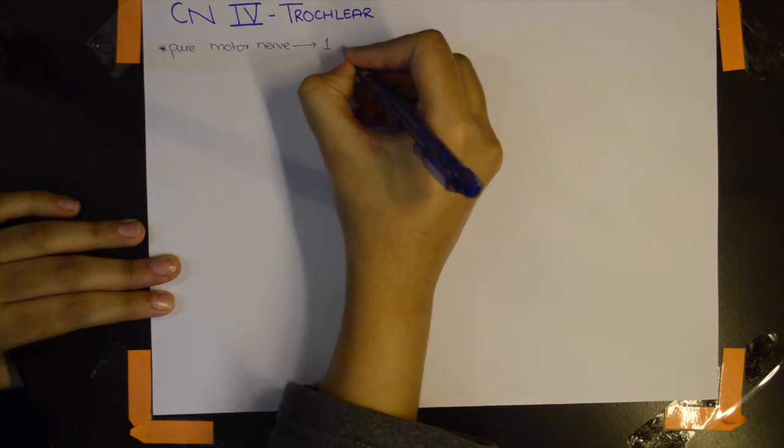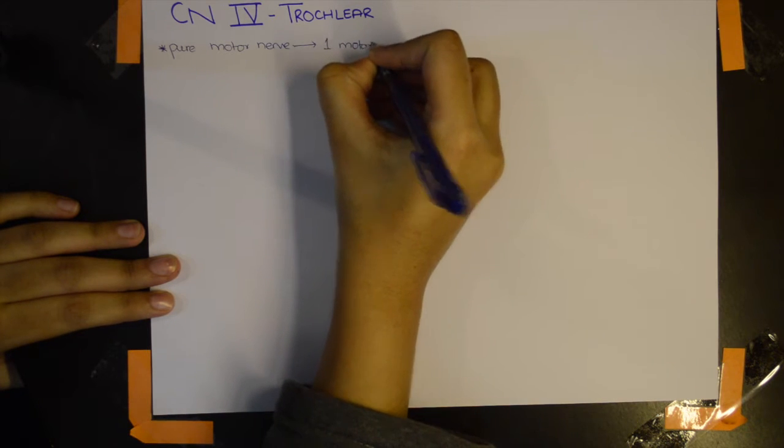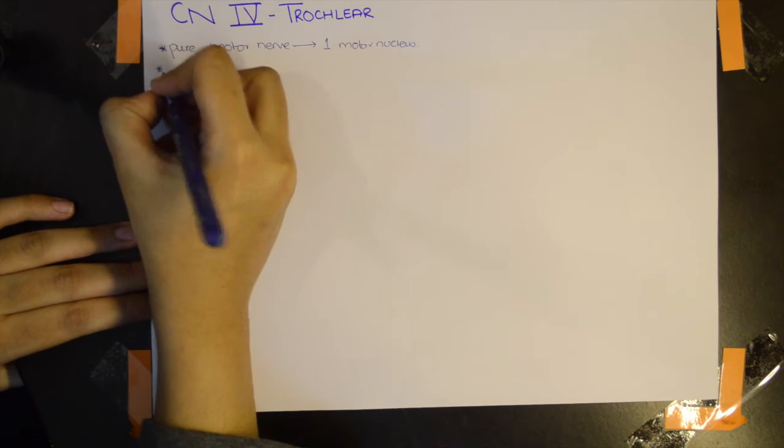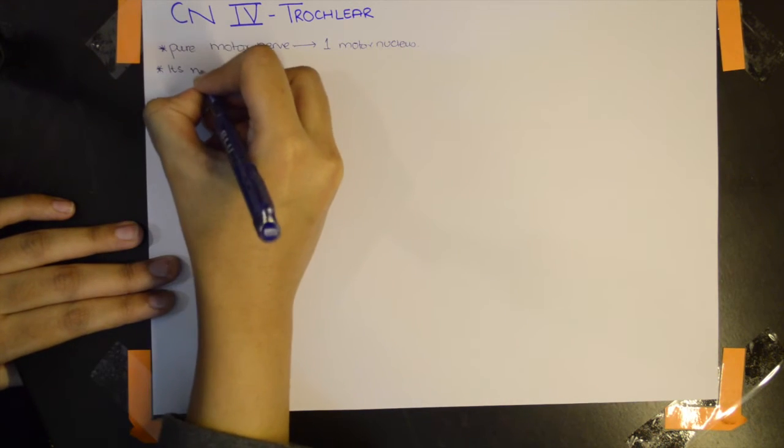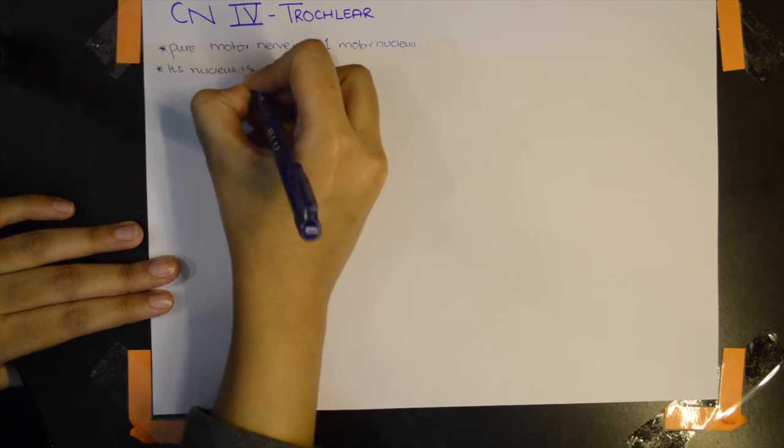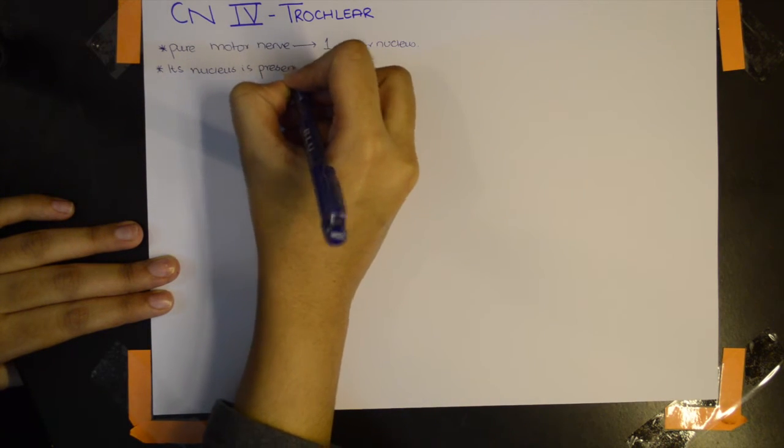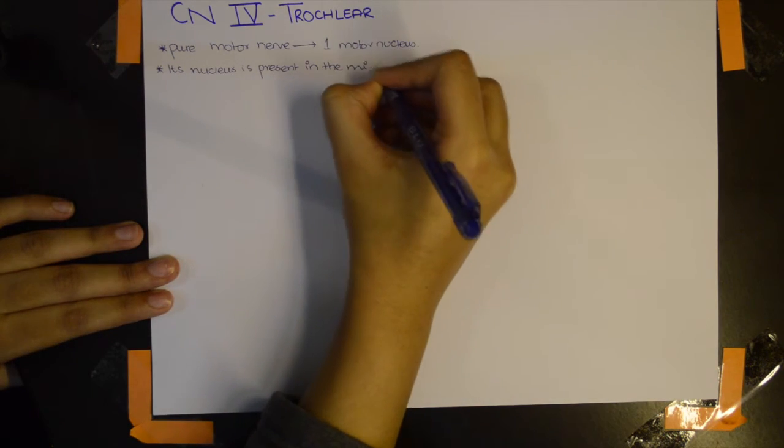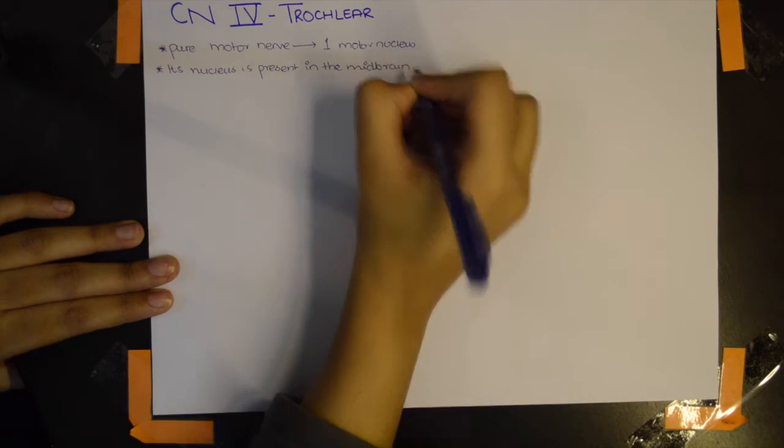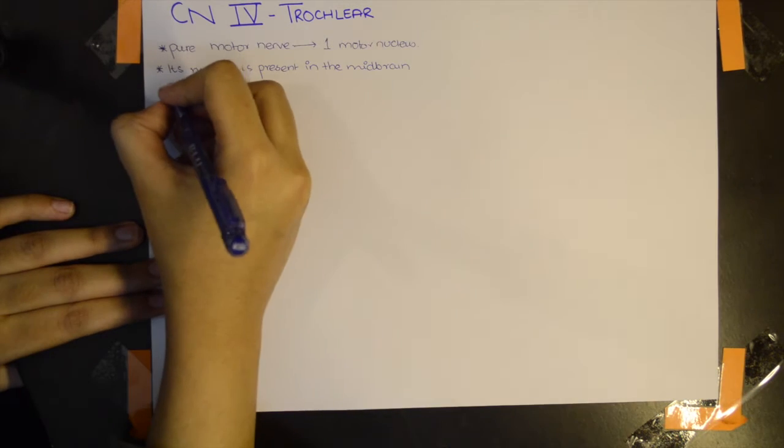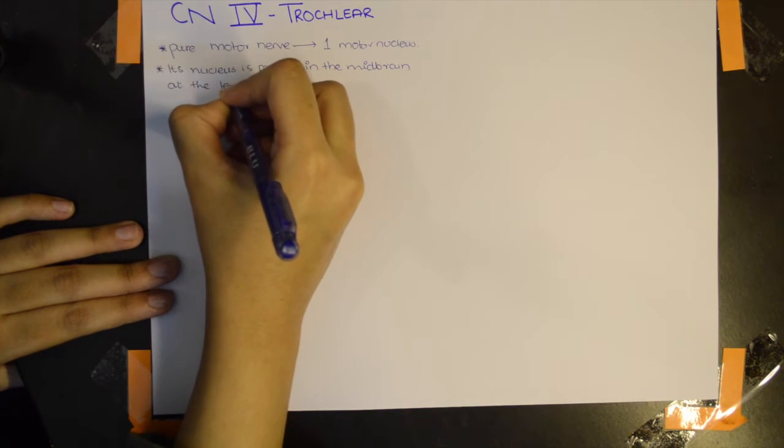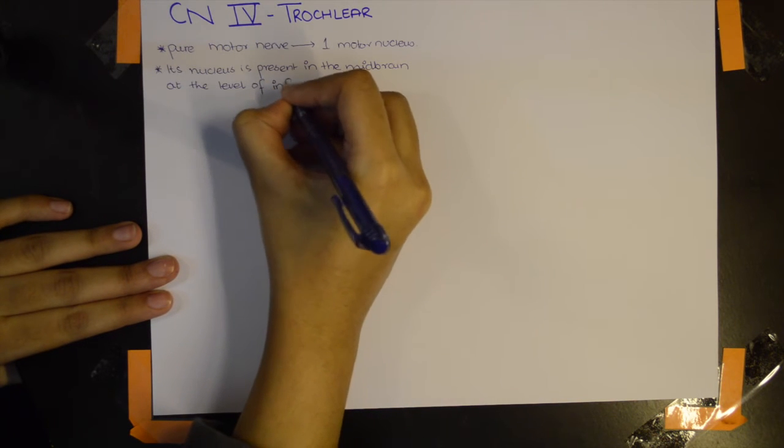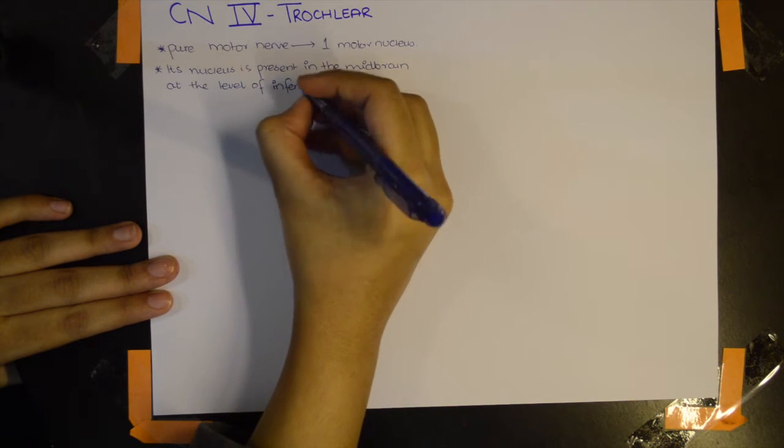It has one motor nucleus. Its nucleus is present in the midbrain at the level of the inferior colliculus.